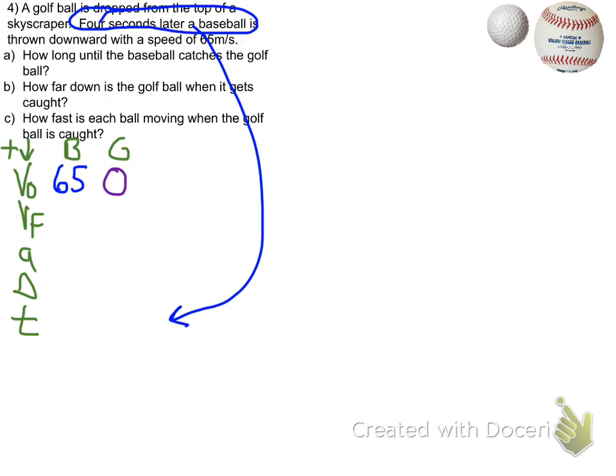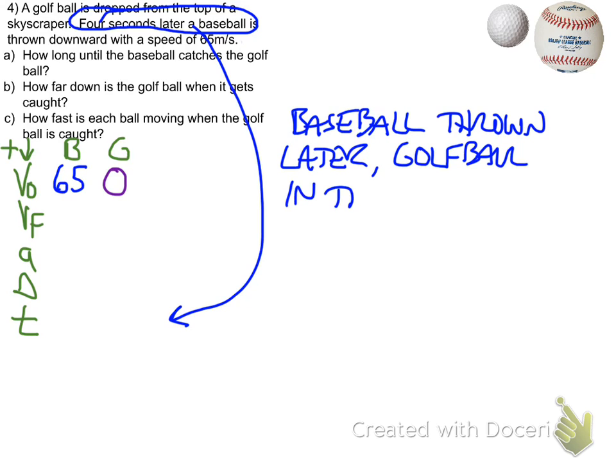It says that the baseball is thrown four seconds later. So one of these gets T and the other gets T plus 4. And we have to remember that since the baseball is thrown later, the golf ball is in the air longer. That means the golf ball gets the T plus 4 because that T represents how long it's in the air.